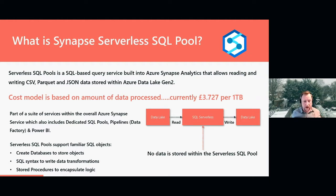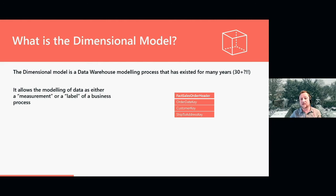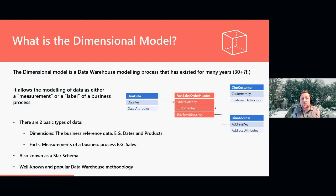No data is actually stored in the serverless pool — it's all in the data lake — but I do have familiar SQL objects: I can create a database, use SQL to write data transformations, use inline functions and stored procedures. The dimensional model is a data warehouse pattern that's existed for many years. We divide data into two basic types: dimensions — reference data, labels, how we measure things — and facts, which are measurements of a business process. I've used sales as an example, but it could be customer activity. It's also known as the star schema.